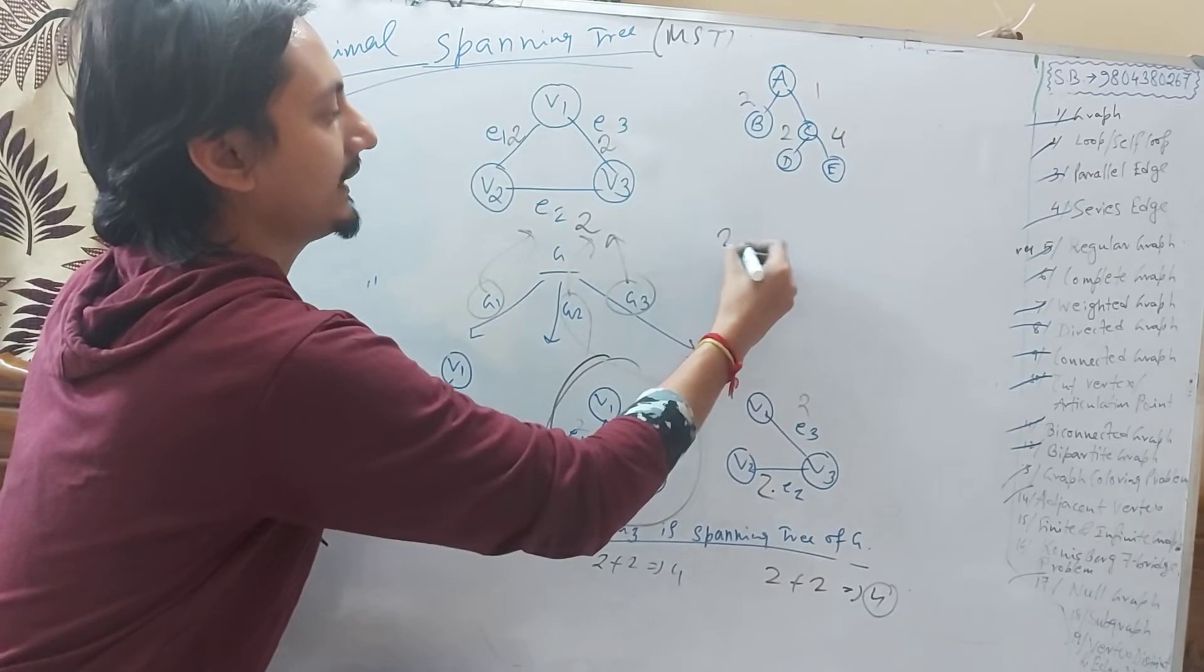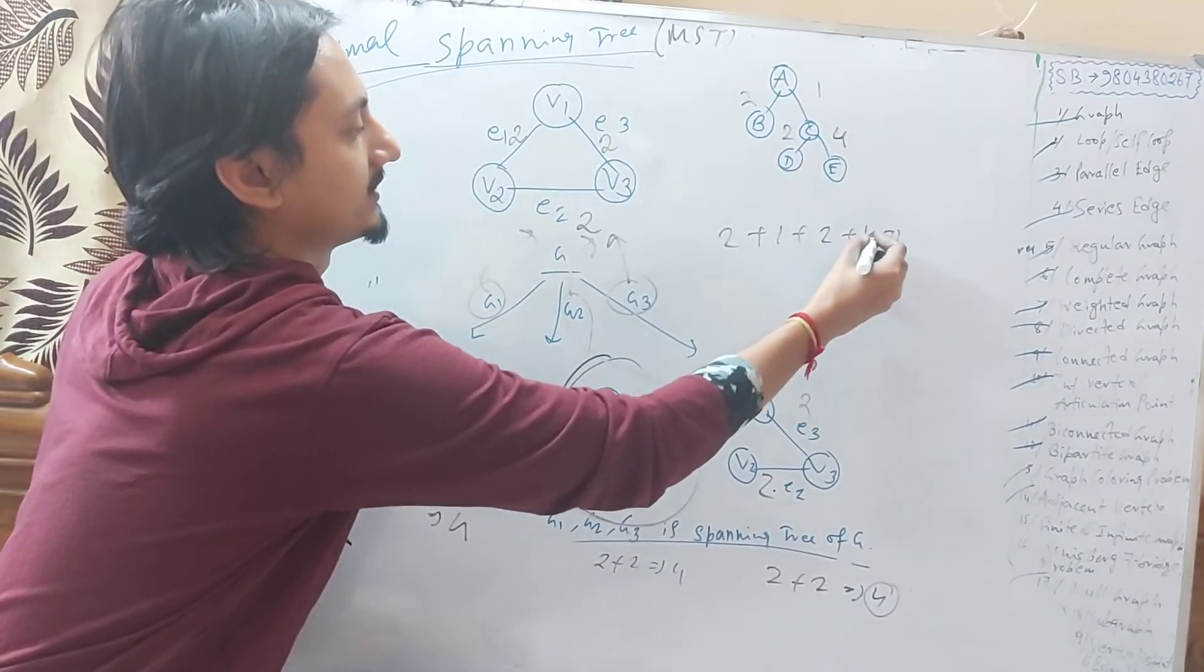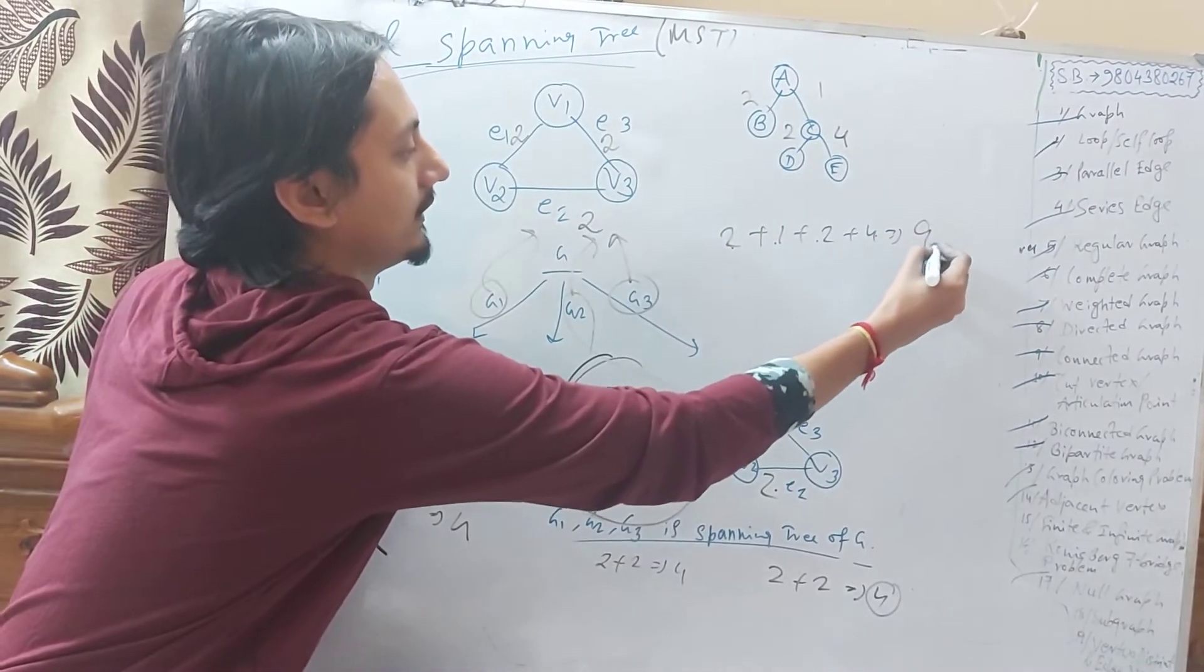That means the minimum spanning tree is 4, 24, 7, 9. So here is the MST.